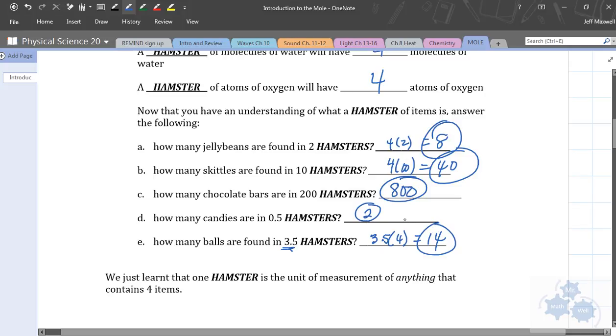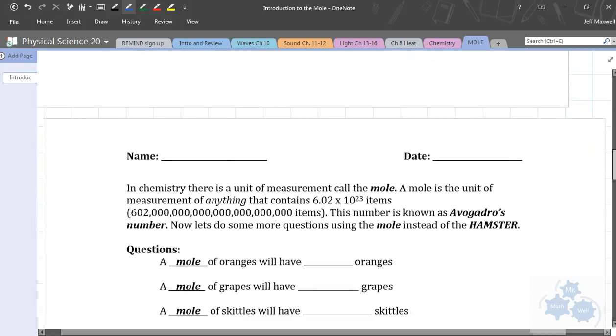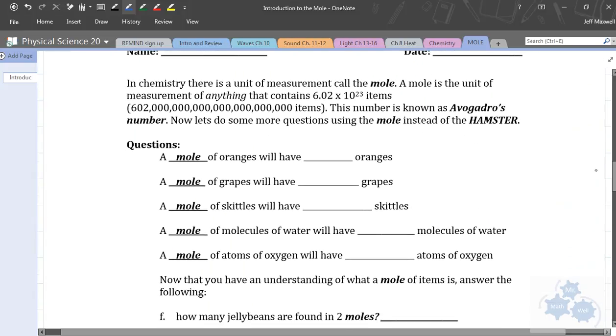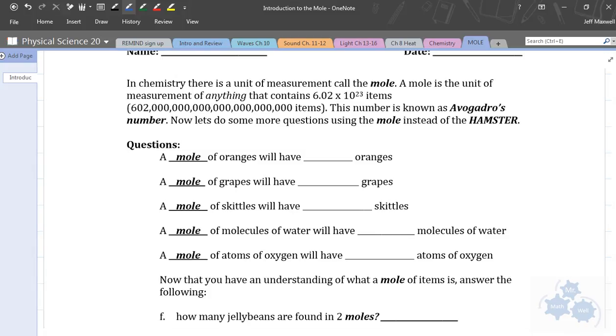Right now you guys are pretty quick and pretty good at dealing with hamsters. So, a hamster in this little make-believe world here is anything that contains four items. Just like a pair contains two items, a dozen contains twelve.